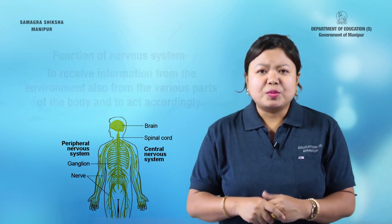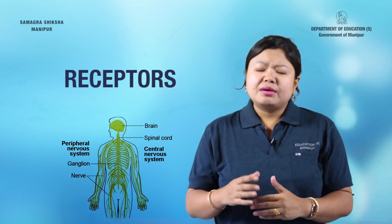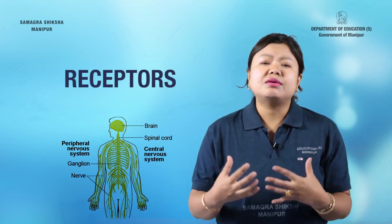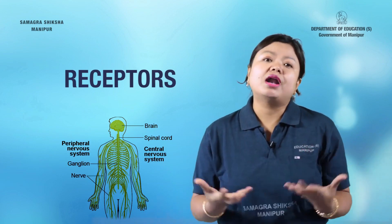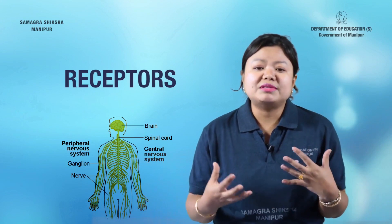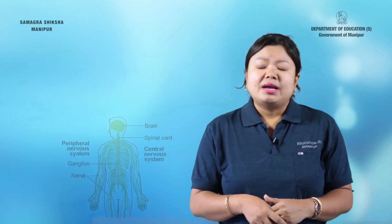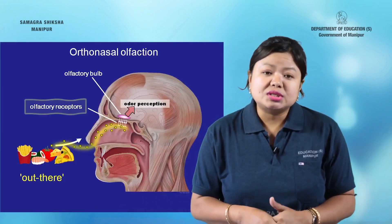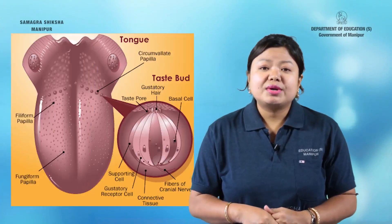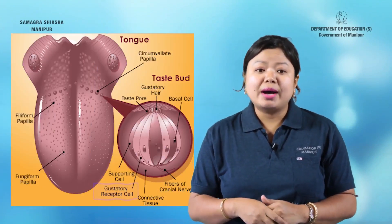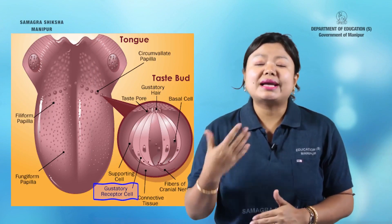The nervous system involves receptors. There are specialised tips to detect information from the environment. For example, we have a nose or olfactory receptors — we can detect smell. There is also a presence of gustatory receptors, which allow us to detect taste.